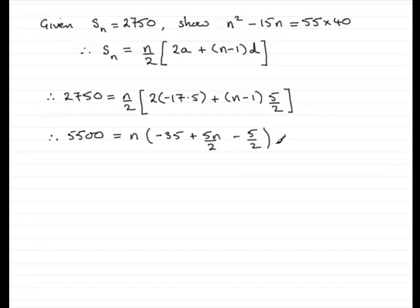What could we do next? We could just group together these two terms: minus 35 and minus 5 over 2. So let's put the 5500 down equals n. Minus 35, we can think of that as minus 70 over 2 if we double it top and bottom. That's minus 70 over 2 minus another 5 over 2, that's minus 75 over 2. Let's put this term first as well: 5n over 2 then minus 75 over 2.